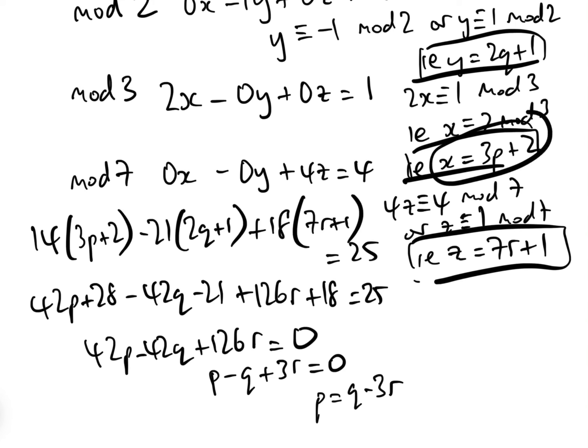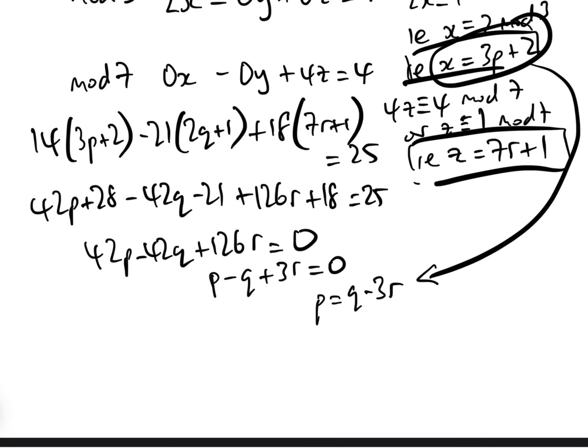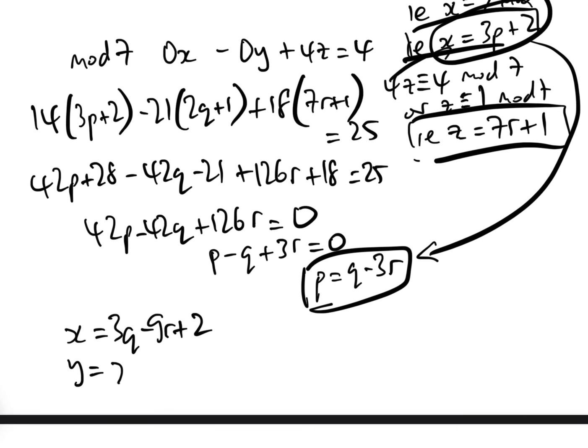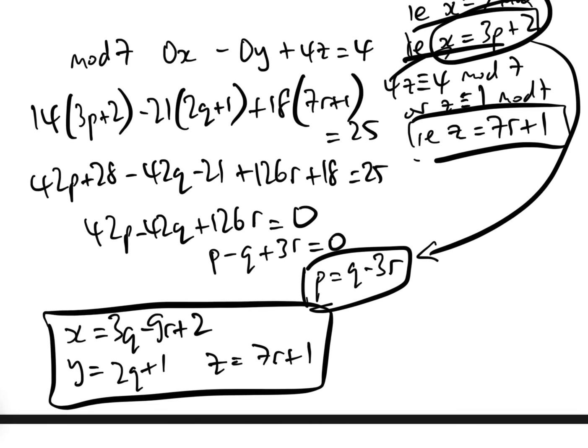In x here, we can replace the P by Q minus 3R. So we have our solution, which is x equals 3Q minus 9R plus 2. All I've done is replaced the P by Q minus 3R. Y equals 2Q plus 1, and z equals 7R plus 1. This is also a solution to the linear Diophantine equation.